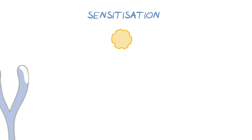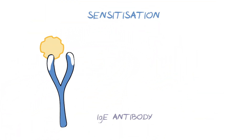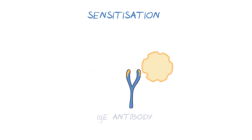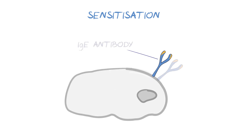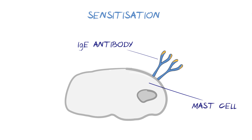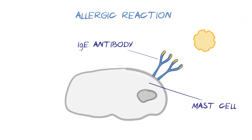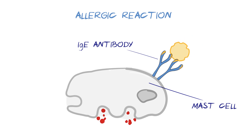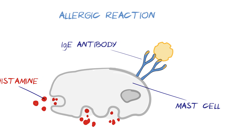When first exposed to an allergen, the immune system creates a type of protein called IgE antibody that is able to uniquely recognise that allergen. After this exposure, the antibodies lie in wait on a type of immune cell called mast cells. If the allergen is encountered again, it causes an allergic reaction. The allergen binds to the antibodies, triggering the mast cells to release their contents, including chemical messengers such as histamine.